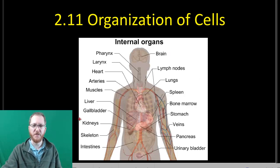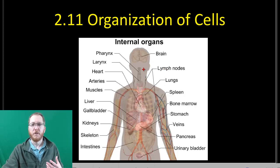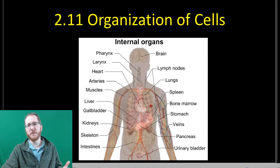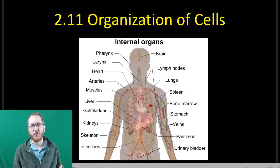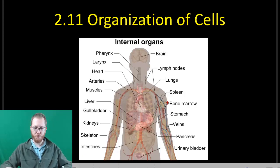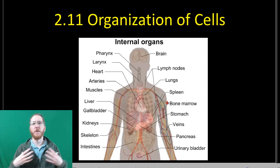We are a multicellular organism with around a hundred trillion cells. Those cells get together to form tissues, tissues form organs, organs form organ systems, and all of that makes up us. This picture labels a bunch of the different organs in our body, which organize into systems and are built by smaller tissues bonding together. We are ultimately a masterpiece of organization.